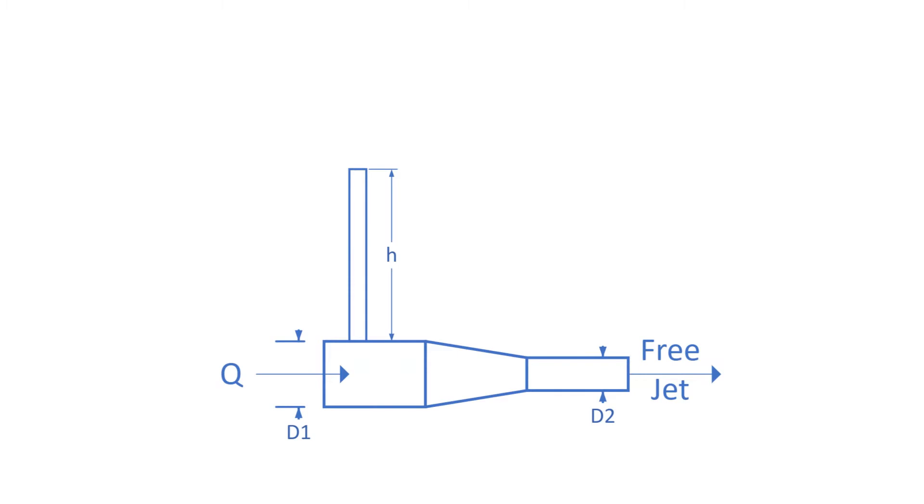Let's set up the solution. First let's select points 1 and 2 to apply Bernoulli's equation and conservation of mass. Point 1 is directly beneath the standpipe. Point 2 is the free jet. Let's also select the datum to be the center of the pipes.